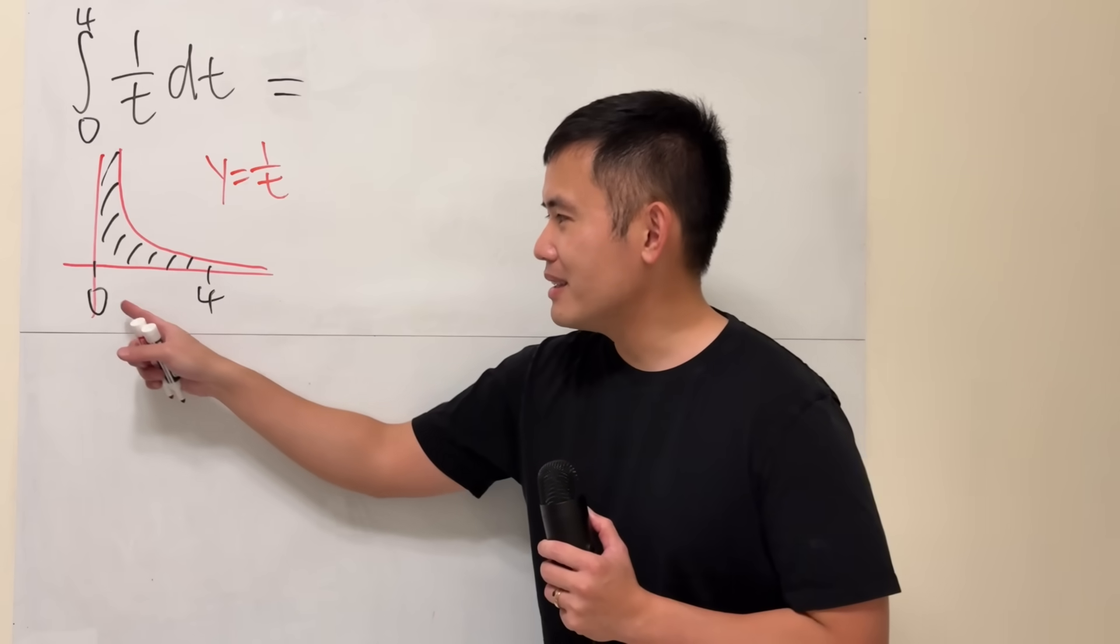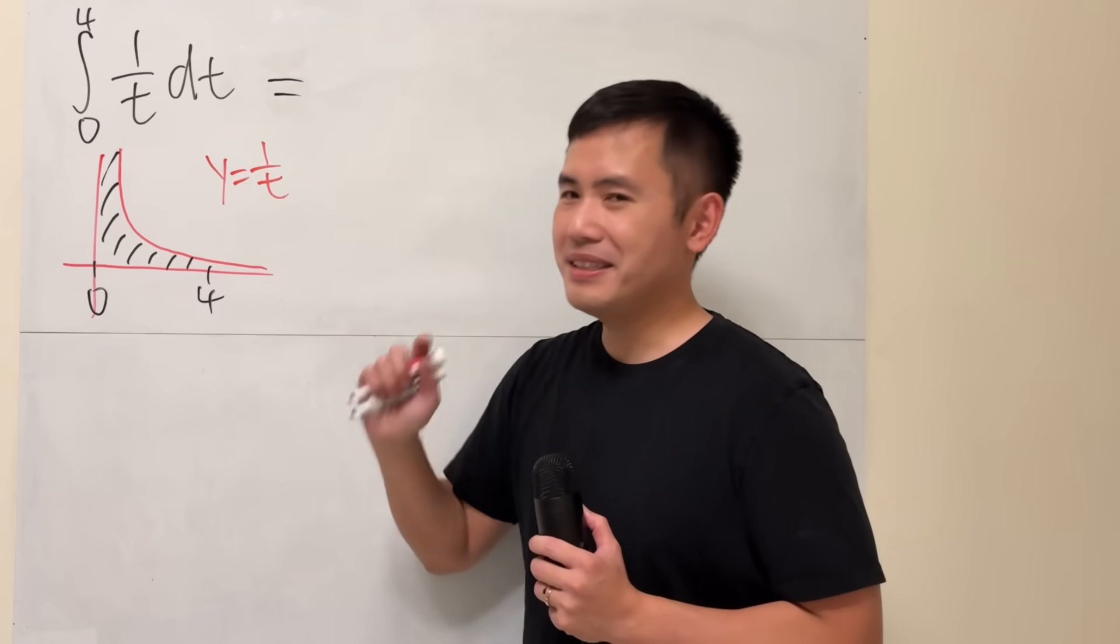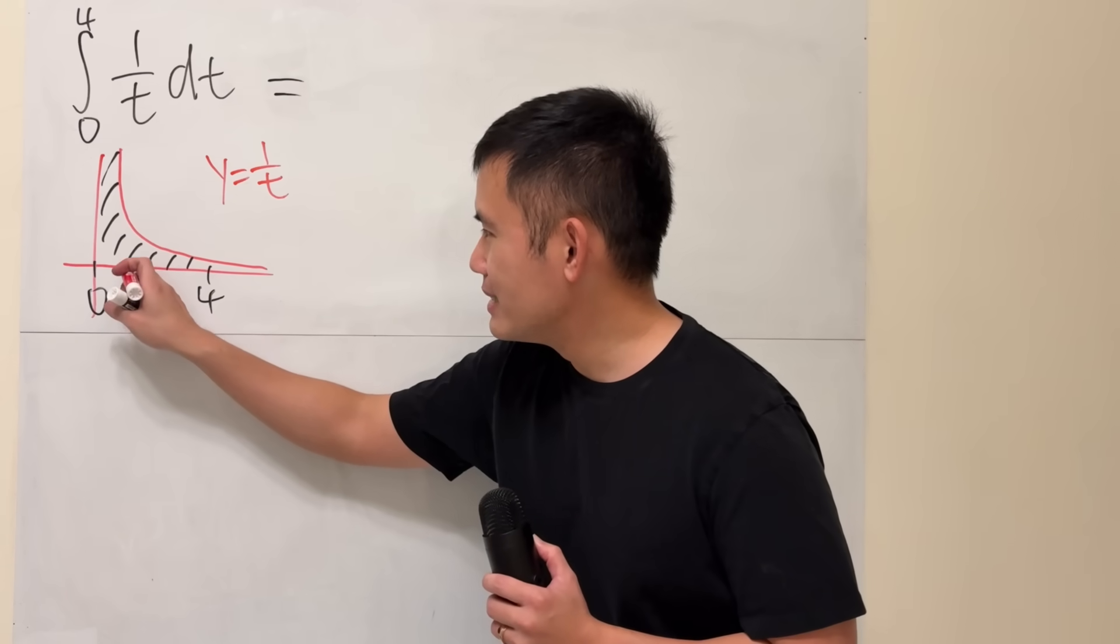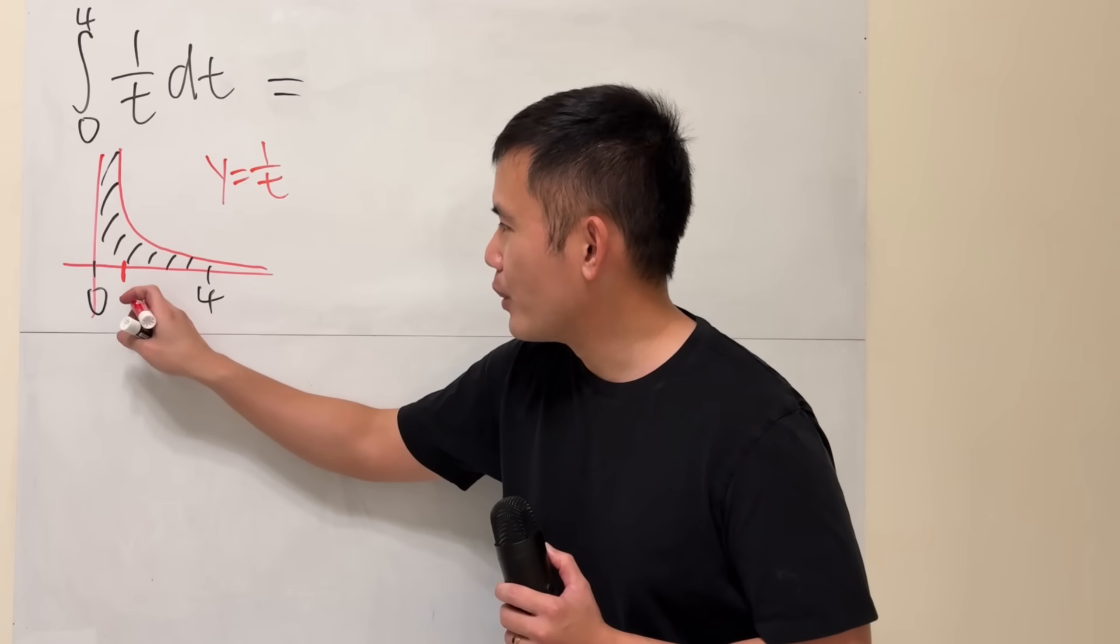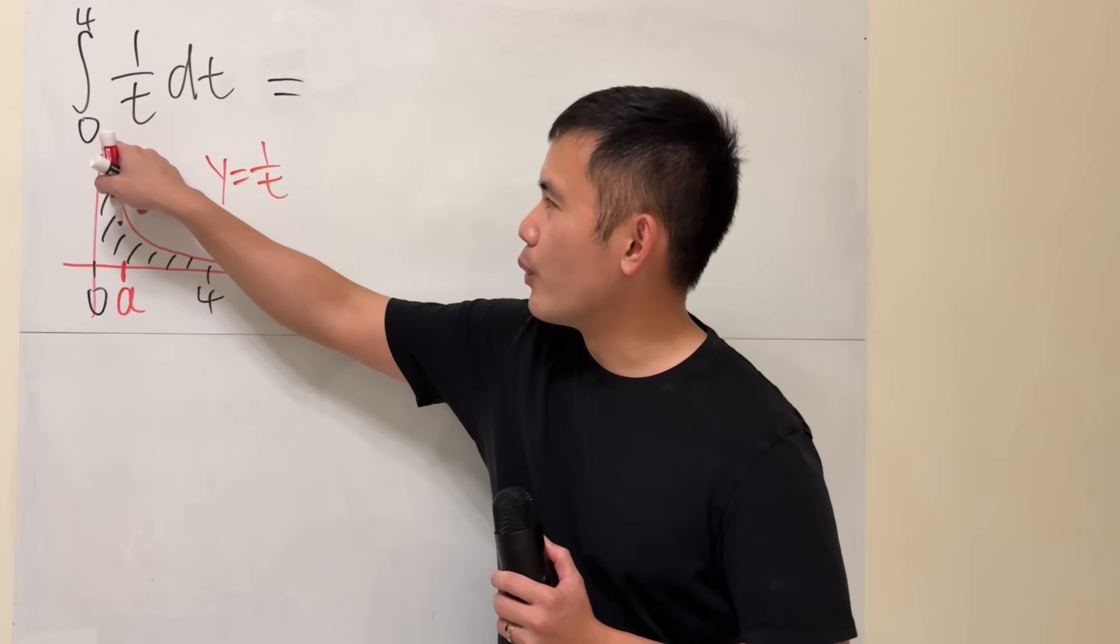Instead of plugging the exact number 0, we are going to go to the right a little bit. So I'm going to put this down right here. I'm going to call it a, because that's a lower number here.